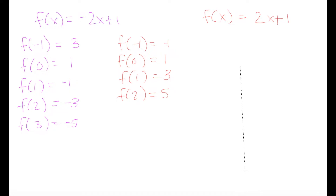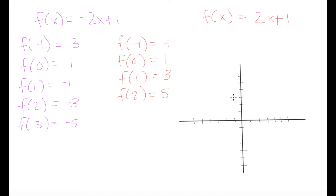Let's draw out our Cartesian plane and plot the purple graph first. When x is equal to negative 1, y is 3, so that's a point here. When x is equal to 0, y is 1, so we have a point here. When x is equal to 1, y is negative 1 — a point over here. When x is equal to 2, y is negative 3, and when x is equal to 3, y is negative 5. So this graph is going to be a line going in this direction.